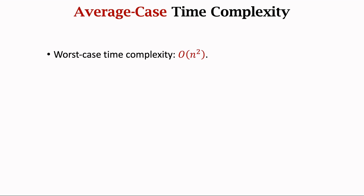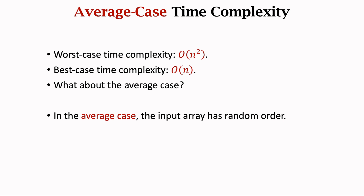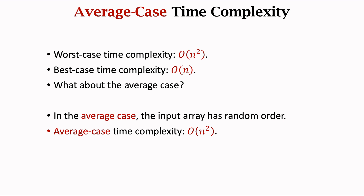The worst case time complexity is O(n²) and the best case is O(n). What about the average case? The average case means the input array is in random order with elements randomly shuffled. Unfortunately, the average case time complexity is also O(n²), the same as the worst case. The analysis uses random variables and expectations and is more involved, so I will not do the proof here. The take-home message is that the time complexity of insertion sort is in general O(n²), but insertion sort can be much faster if the input is close to ascending order.